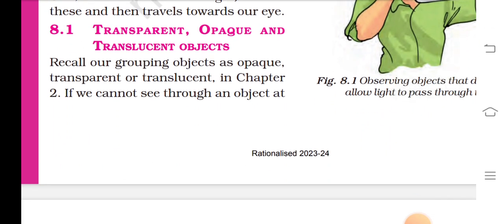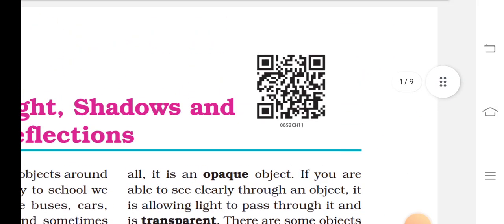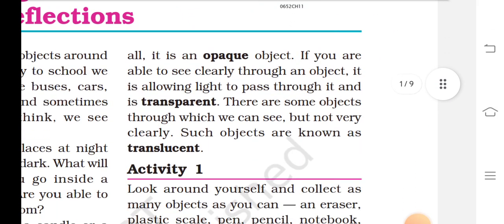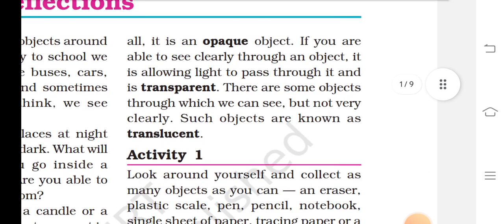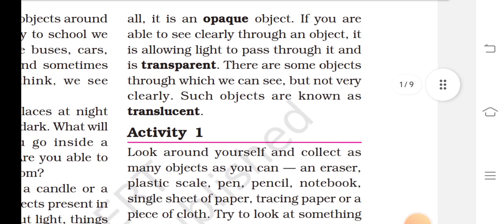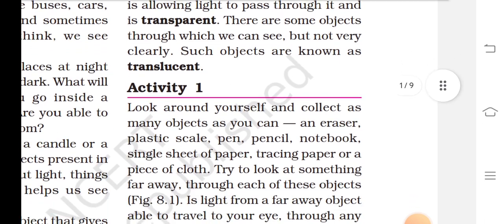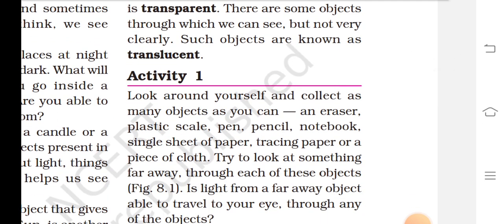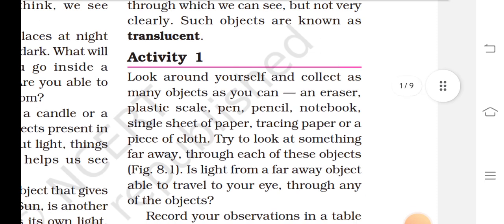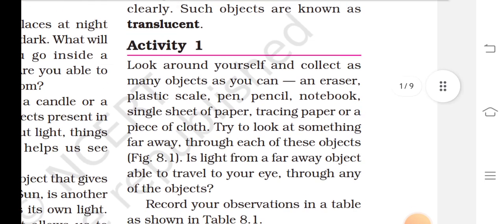Transparent, translucent, and opaque objects. If we cannot see through an object, it is an opaque object. If you are able to see clearly through an object, it allows light to pass through it and is transparent. There are some objects through which we can see, but not very clearly. Such objects are known as translucent.